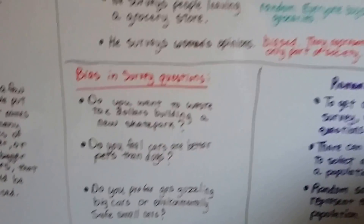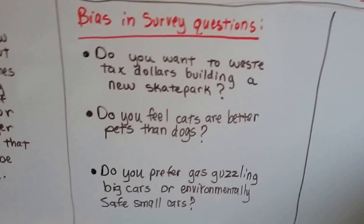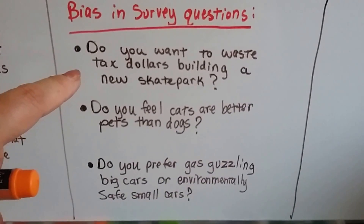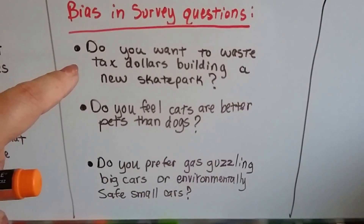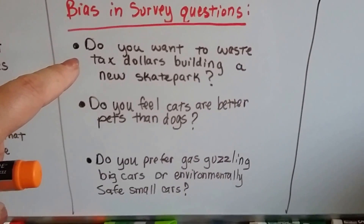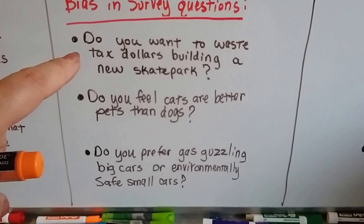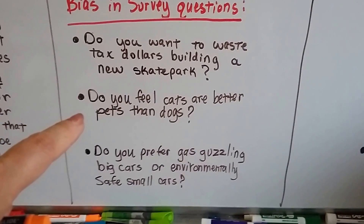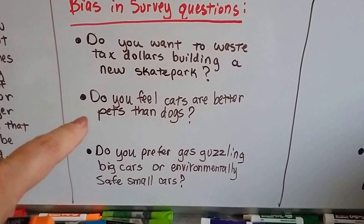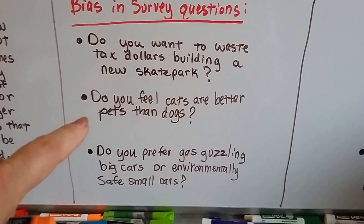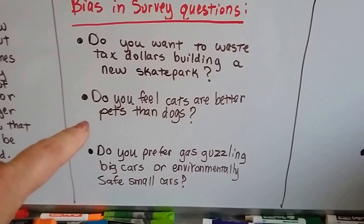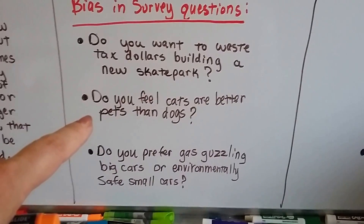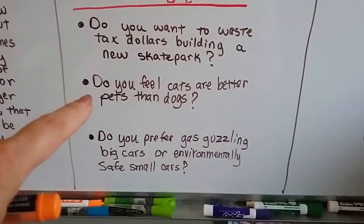So there's bias in survey questions too. A survey could say, "Do you want to waste tax dollars building a new skate park?" Well, that would make people nervous about saying yes because they would feel like they're giving the wrong answer — that would be a biased question. Or, "Do you feel cats are better pets than dogs?" That's a biased question also. That's not fair to ask somebody. You should just say, "What's your favorite type of pet?" That would be unbiased.